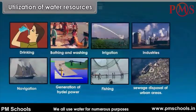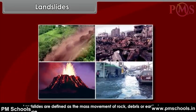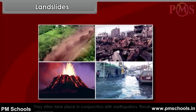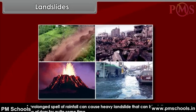Landslides are defined as the mass movement of rock, debris, or earth down a slope. They often take place in conjunction with earthquakes, floods, and volcanoes. A prolonged spell of rainfall can cause heavy landslides that can block the flow of a river for quite some time. The formation of river blocks can cause havoc to the settlements downstream.